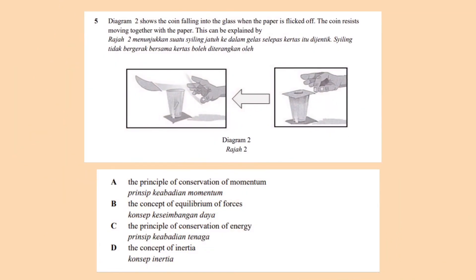Next question. The diagram shows a coin falling into the glass when a paper is flicked off. The coin resists moving together with the paper. When the paper is flicked off, the coin resists moving together because the coin retains its motion at a state of rest. Therefore, this could only be explained by D, the concept of inertia.